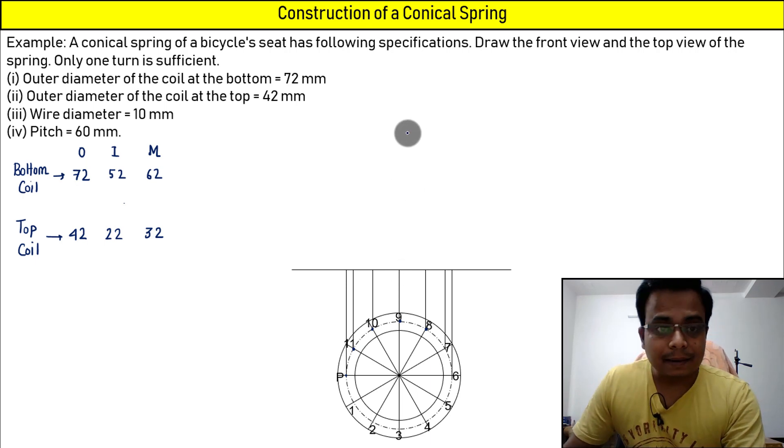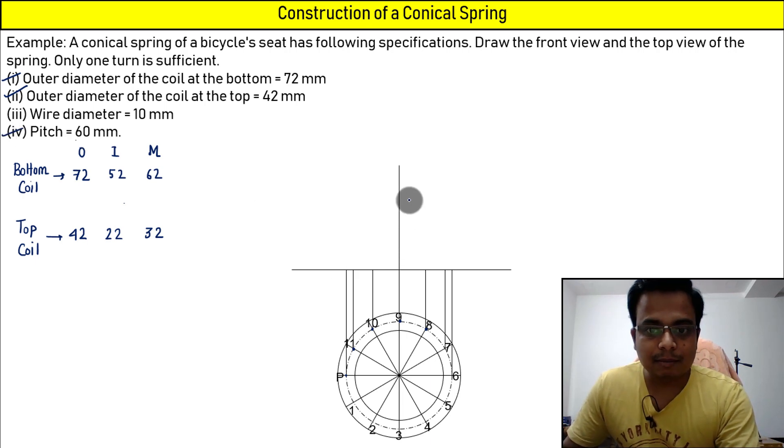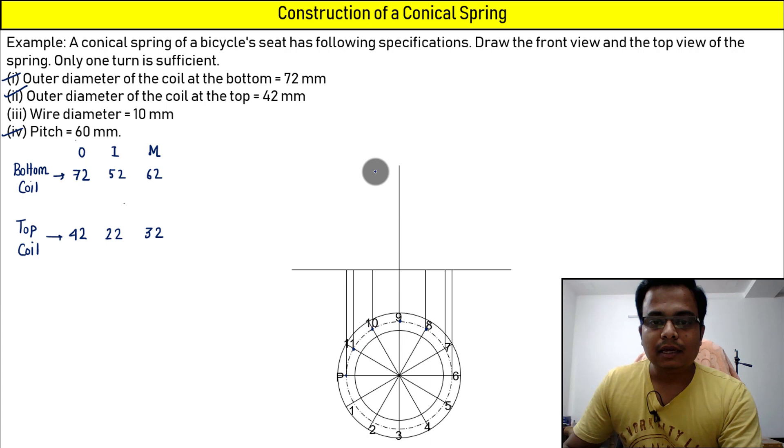Now we don't know what the height of the cone is, we don't need that really. The next data which we are going to use—we've already used these two data—and the next data which we'll use is this pitch, and that is 60 millimeters. So from here, travel 60 millimeters up this line which I have just drawn. This is 60 millimeters.